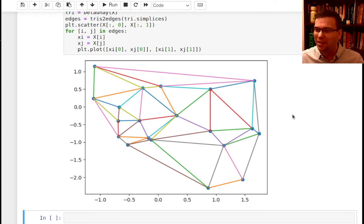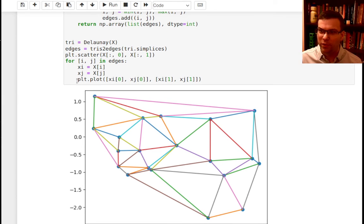Okay, there we go. Anyway, there's the Delaunay triangulation. It's nice and colorful because matplotlib is cycling through a color palette when it plots the different edges. But yeah, so there's how you get a Delaunay triangulation.